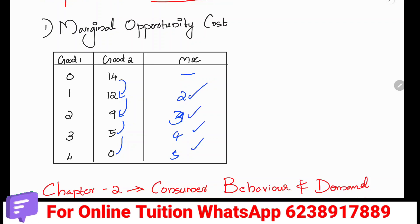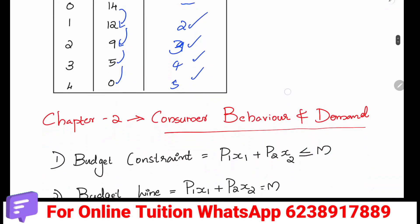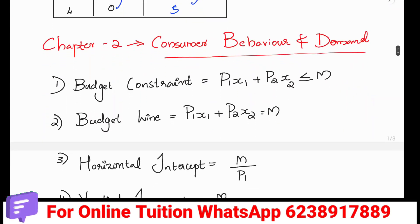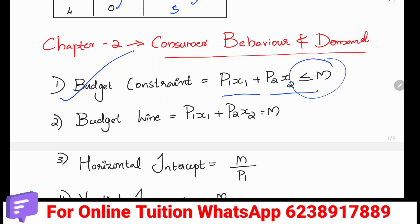We will have the marginal opportunity cost. That is why we have problems in the first chapter. Then the first half chapter is consumer behavior and demand. The budget is constrained.